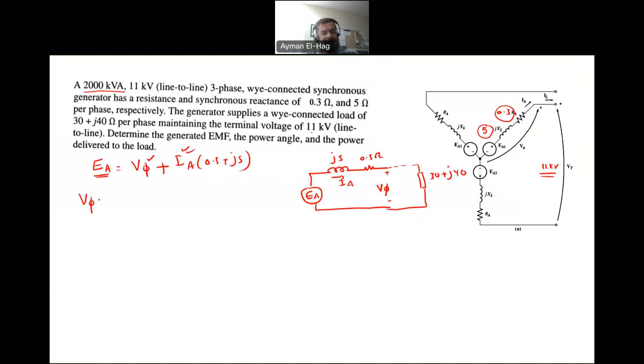What is V phase? It's basically the terminal voltage of the phase. So it is the terminal voltage, the line to line, which is the 11 kilovolt, divided by root 3. And this is always, my terminal voltage is my reference, so the angle is equal to 0. So this will give me a total voltage of 6.35 kilovolt, angle of 0. This is your V phase.